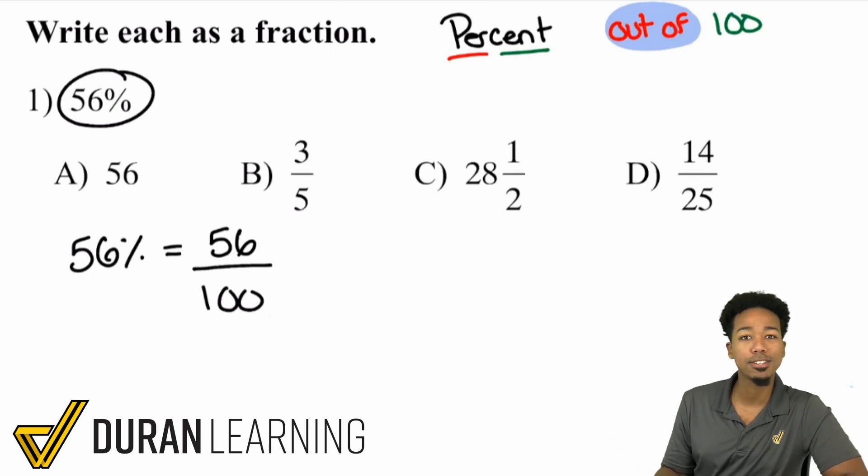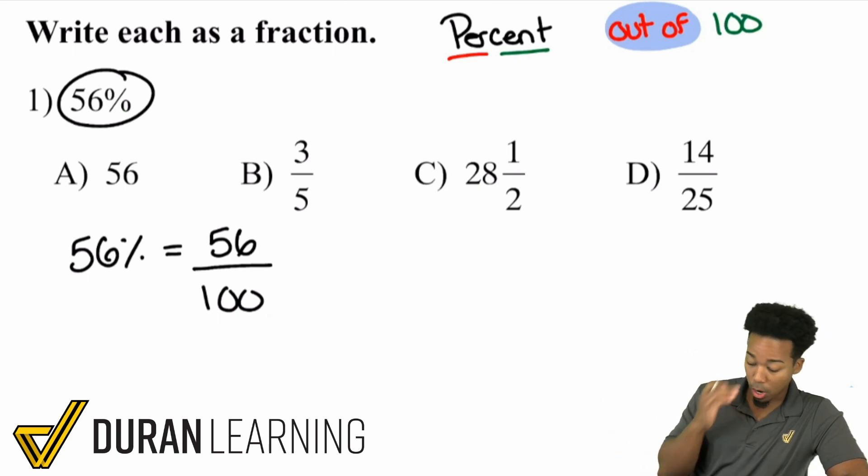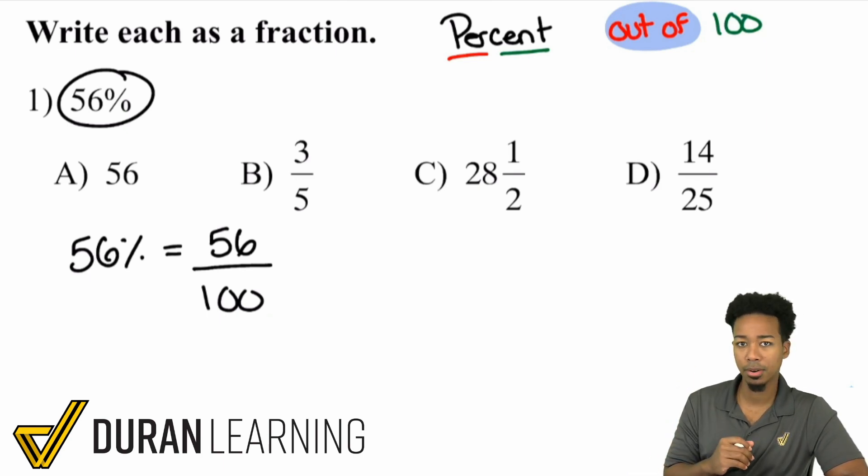So you take a look right here, 56 over a hundred. Are we done though? No, not quite. Because remember, when it comes to dealing with fractions, typically we want to simplify them. So taking a look here, we have 56 out of a hundred. What are 56 and a hundred both divisible by? But if you can't see that, remember to start small.